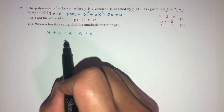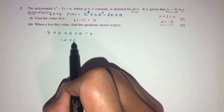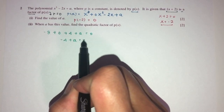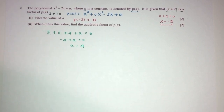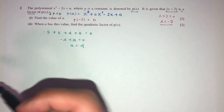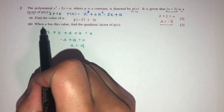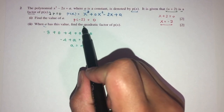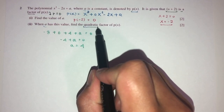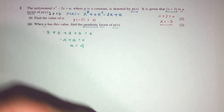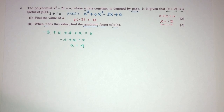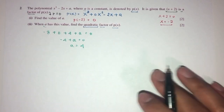Simplifying: −8 + 4 = −4, plus a = 0, so a = 4. That is part one. Now for part two: when a has this value, find the quadratic factor of p(x). We find the other factor using long division.